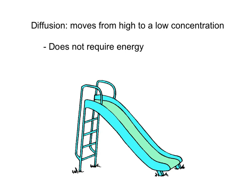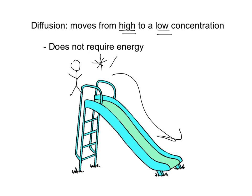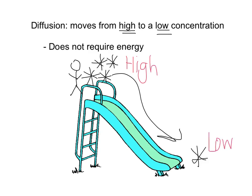Let's start with a reminder of what diffusion is. Diffusion is when molecules move from a high concentration to a low concentration. This is like our slide analogy — we would start at the top of the slide and go down to the bottom. We start where there is a lot of something and go down to where there is a low concentration. Just like going down a slide does not require energy, diffusion doesn't require energy.